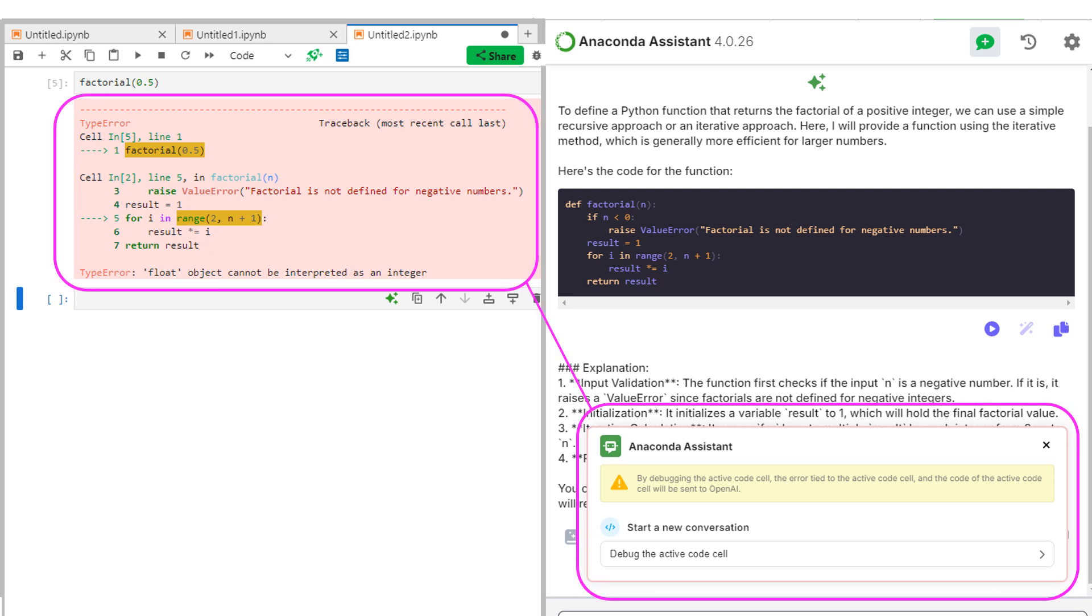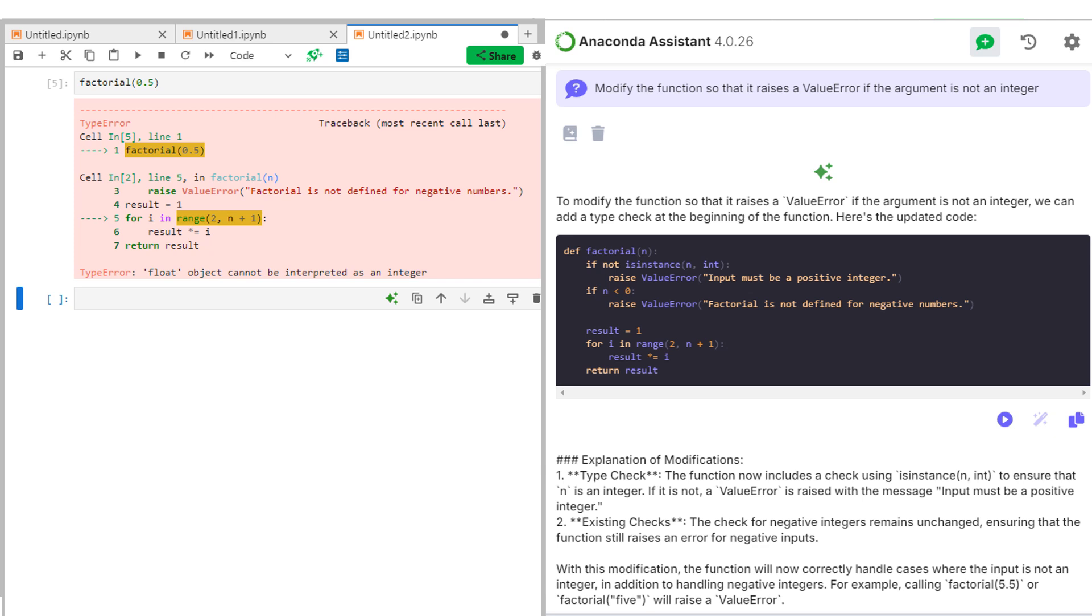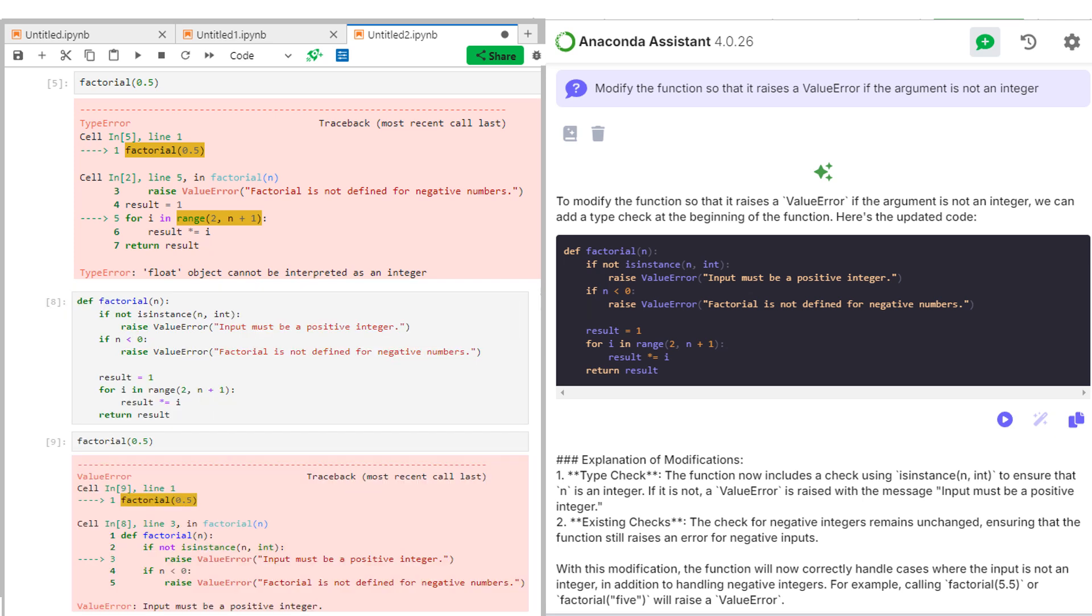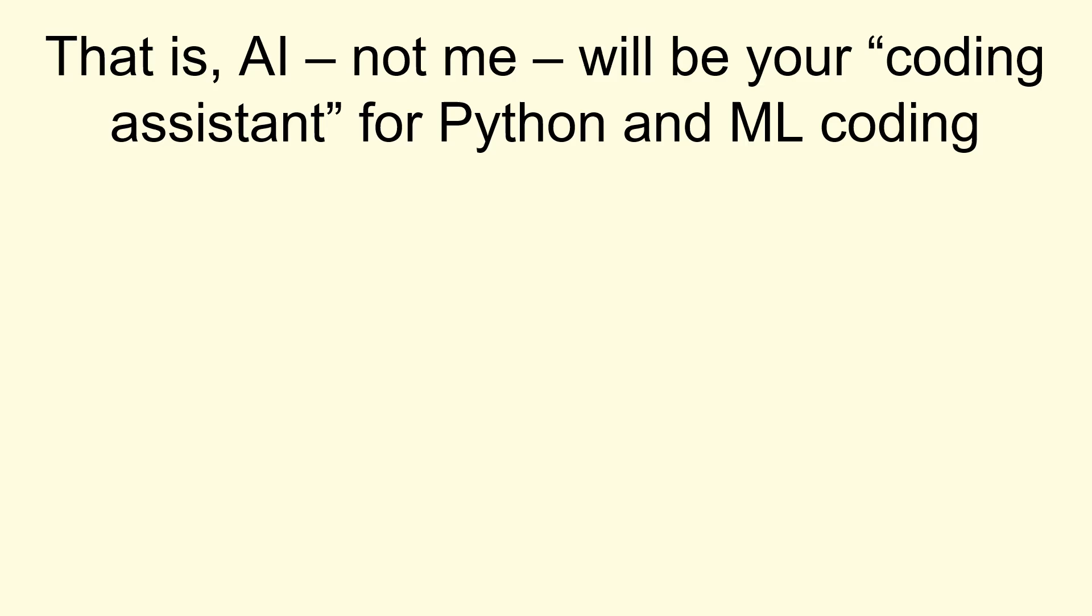So we can go to the Anaconda assistant again and we can ask the question - or actually the statement: modify what you've done so that it also raises a value error if the argument is not an integer. And here we have again the code for our factorial function, and notice that it now will raise a value error if you don't have a positive integer and a value error if you put in a negative number.